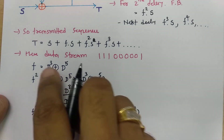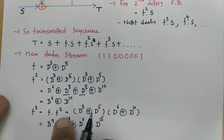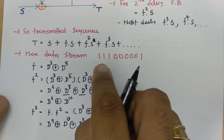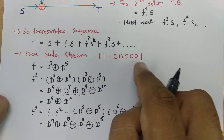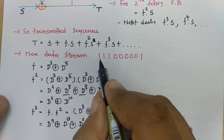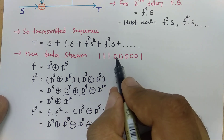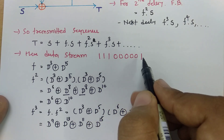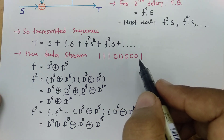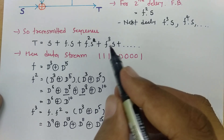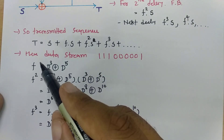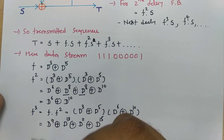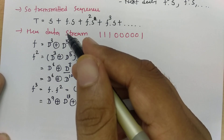We can calculate even further, but now we don't need to. The reason is our data stream is of 9 bits only — 1, 2, 3, 4, 5, 6, 7, 8, 9. So 9 bits are there, so we don't need to calculate further terms like f⁴ and beyond.